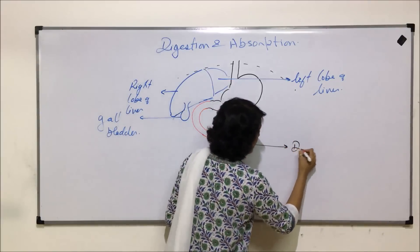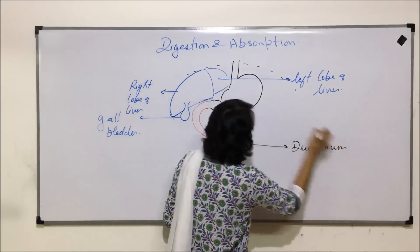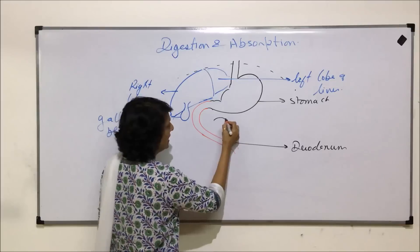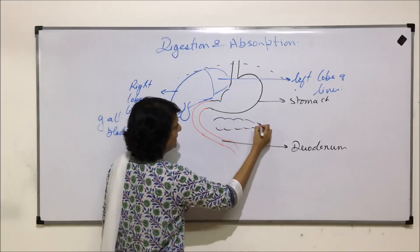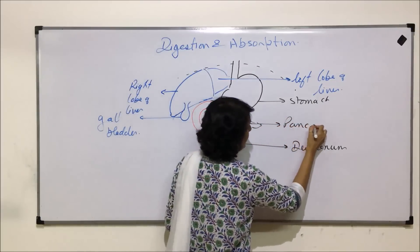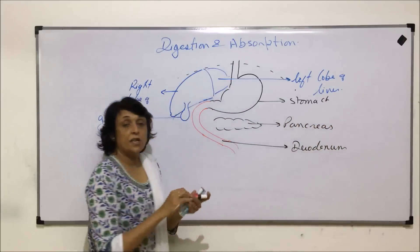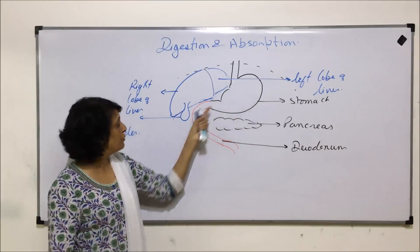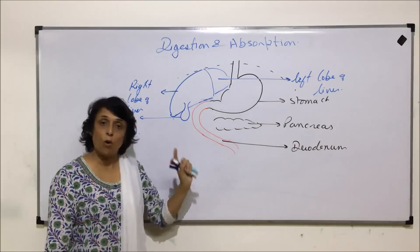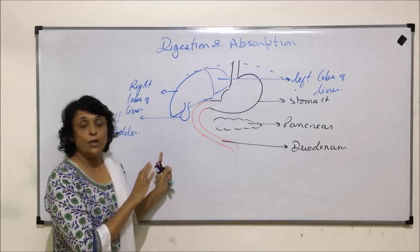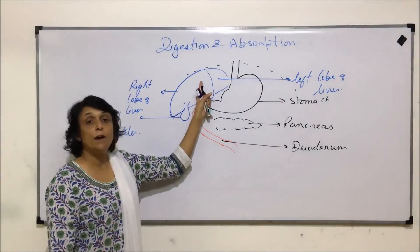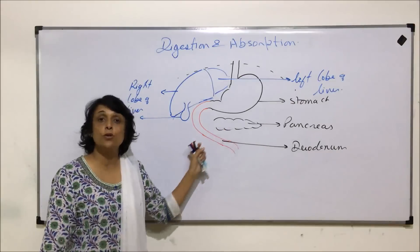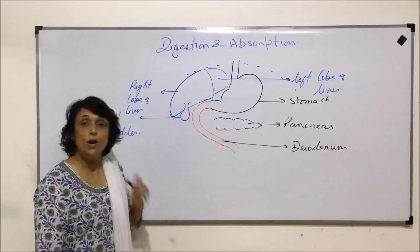Let us label this: this is the duodenum, this is the stomach, and here is the tubular gland that is the pancreas. We have already seen the structure of the stomach and which juices are produced there, and we talked about the small intestine and all three parts. Now we are discussing the connection — how the liver pours its secretion, which is known as bile, and how the pancreas pours its secretion, known as pancreatic juice, into the duodenum.